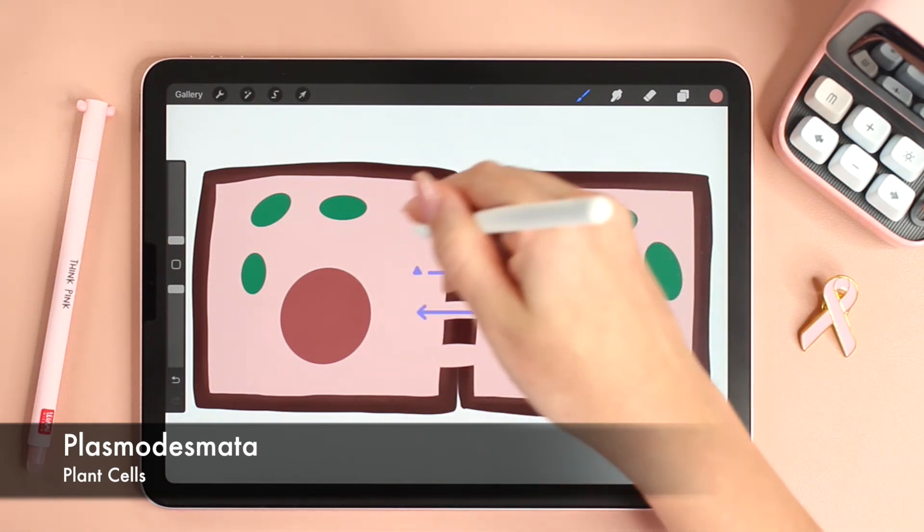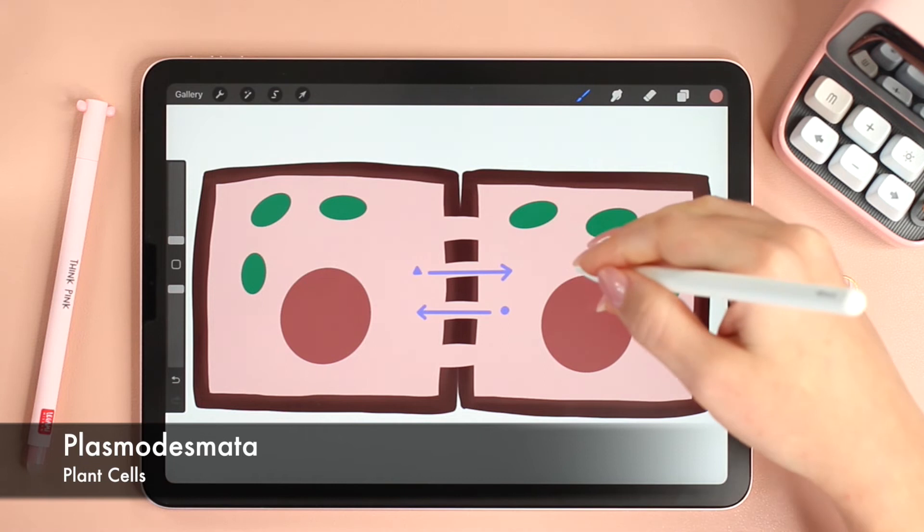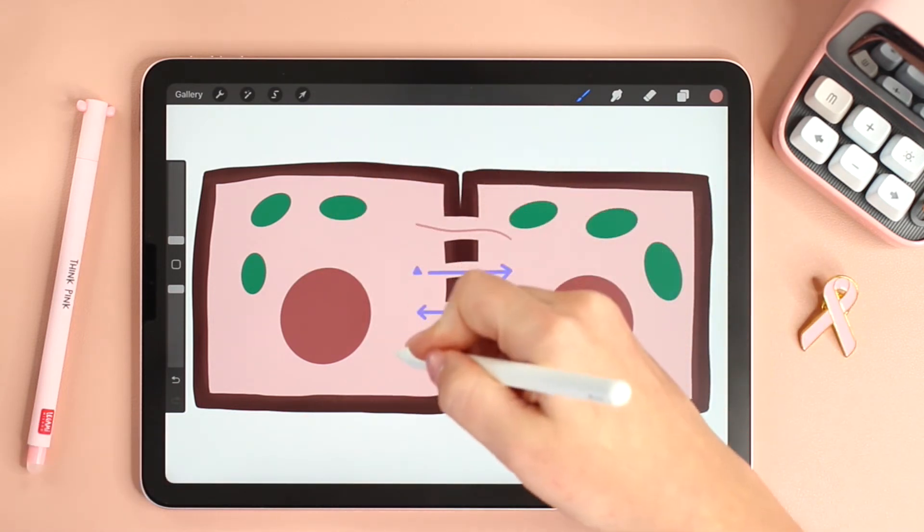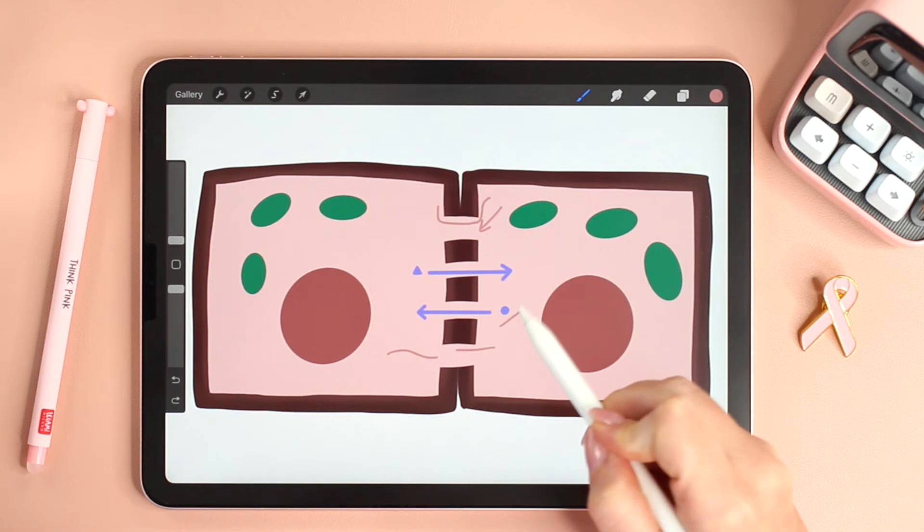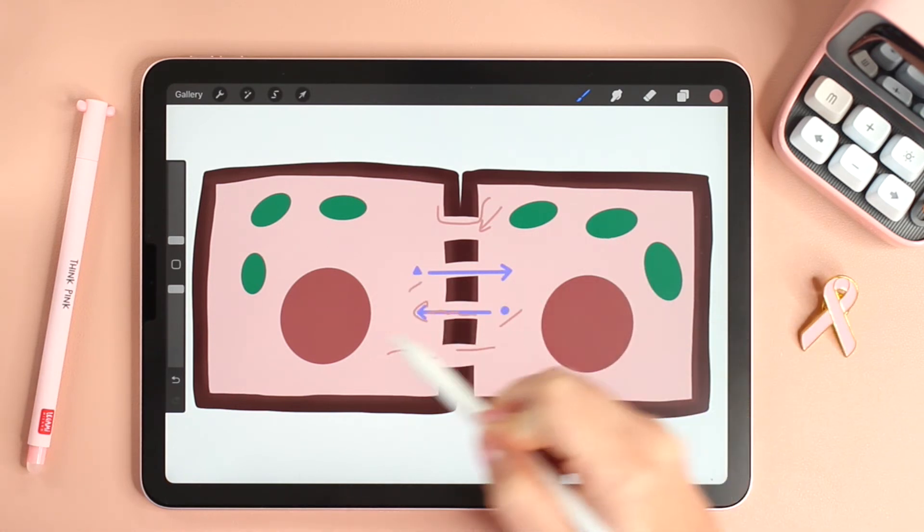Plasmodesmata are lined with the plasma membrane and they're filled with cytoplasm. Small and water-soluble molecules can move freely by passive diffusion.